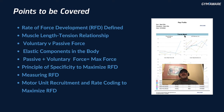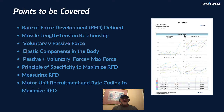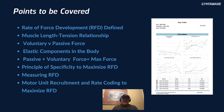We're going to look at RFD — I'm going to define it for you: rate of force development. We'll cover the muscle length-tension relationship and how it comes into play, voluntary versus passive force, elastic components in the body, how passive plus voluntary force equals max force, the principle of specificity to maximize RFD, how to measure RFD, and motor unit recruitment and rate coding.